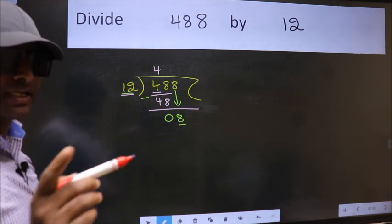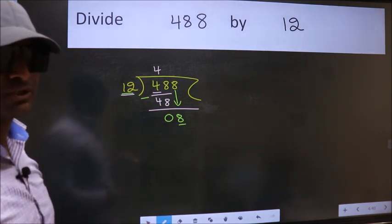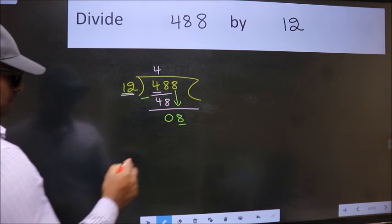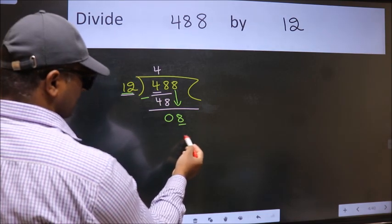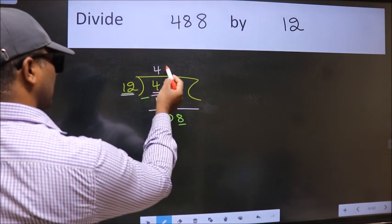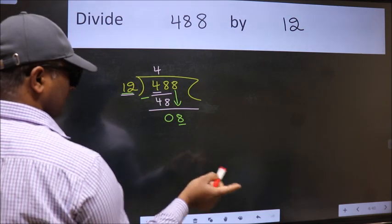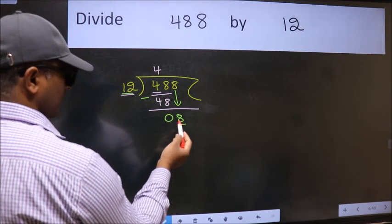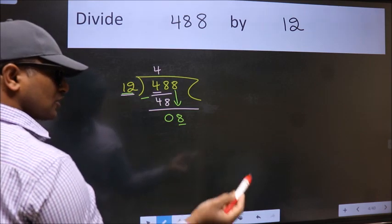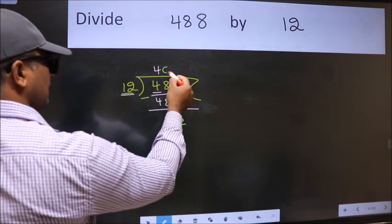Instead of that, what we should think of doing is, which number should we take here? If I take 1, we will get 12. But 12 is larger than 8, so what we do is we take 0 here.